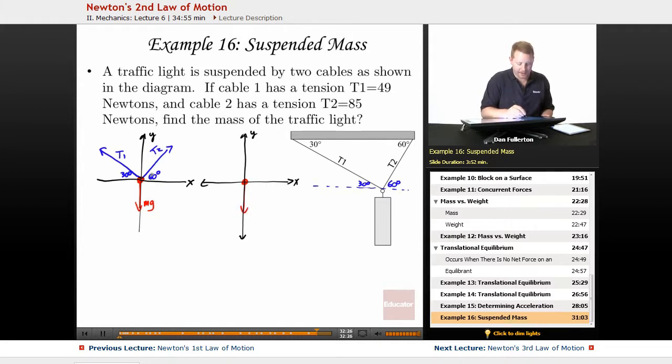Let's start with T2 here. Its x component is going to be T2 cosine 60 degrees, and its y component will be T2 sine 60 degrees.